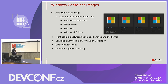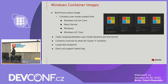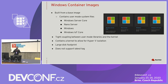Another quirk with Windows container images is that they don't support the 'latest' tag. You have to be specific. If you want Windows Server Core, you have to specify a tag like LTSC 2019, which indicates a 2019 instance of Windows Server Core. They have similar tags for Windows Server 2016 containers.